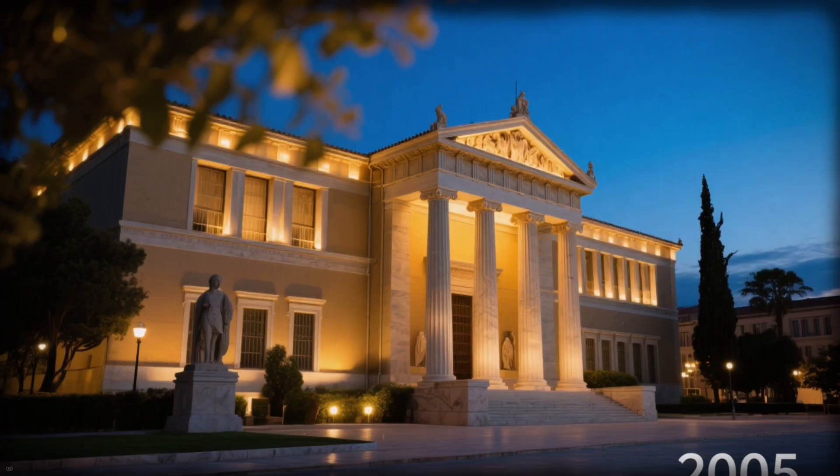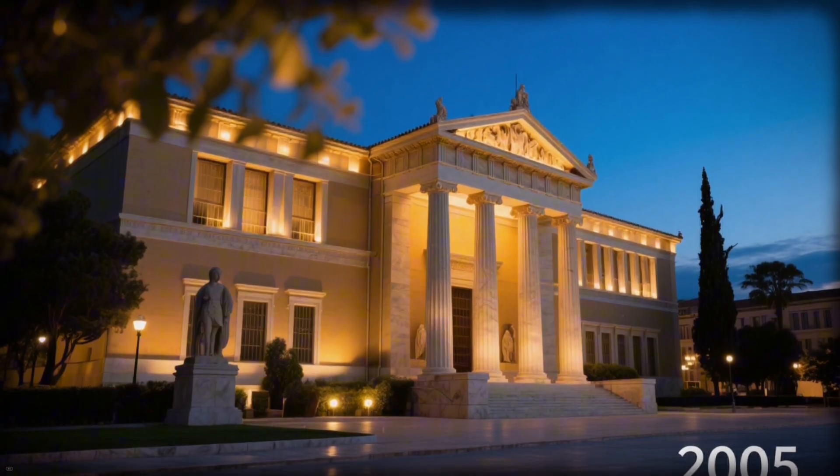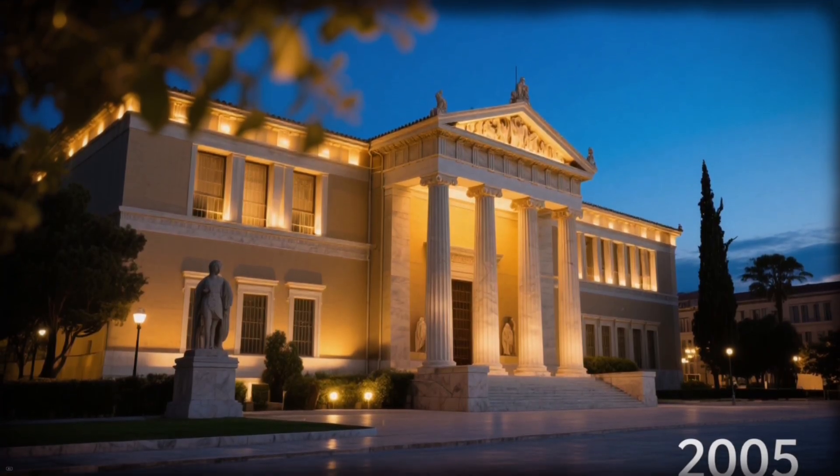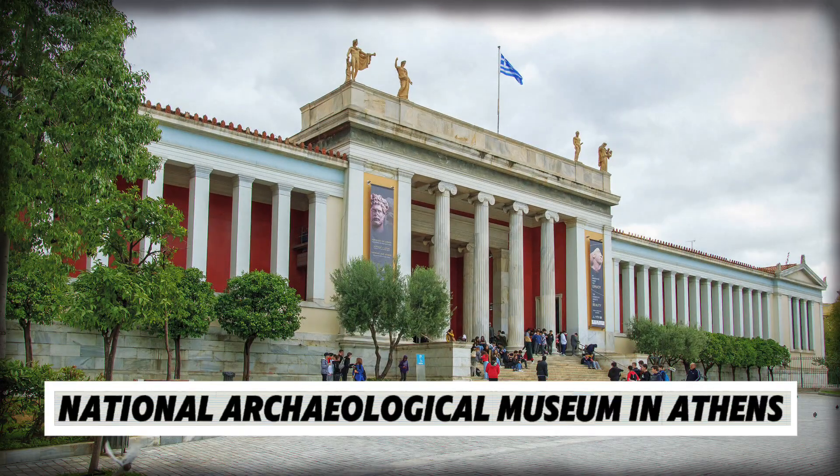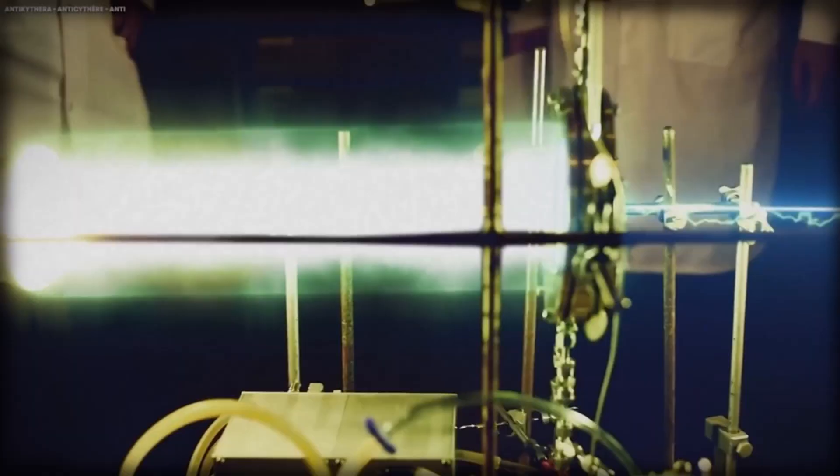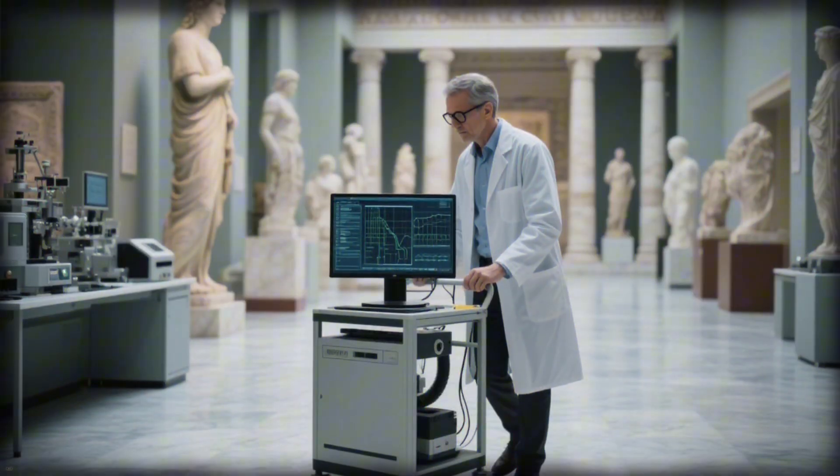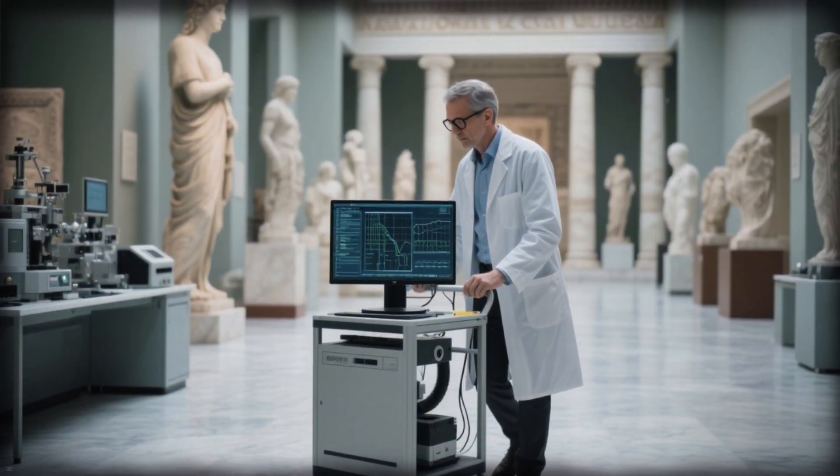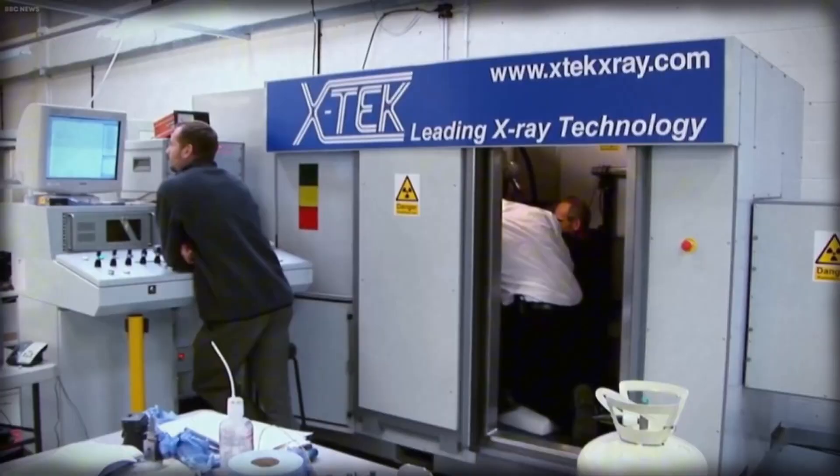Then came the year 2005. The year the past finally began to reveal its secrets. A team of Greek and British researchers entered the National Archaeological Museum in Athens, carrying technology that no archaeologist had ever used before. Their mission wasn't to admire the artifact, it was to see through it. They brought two machines.